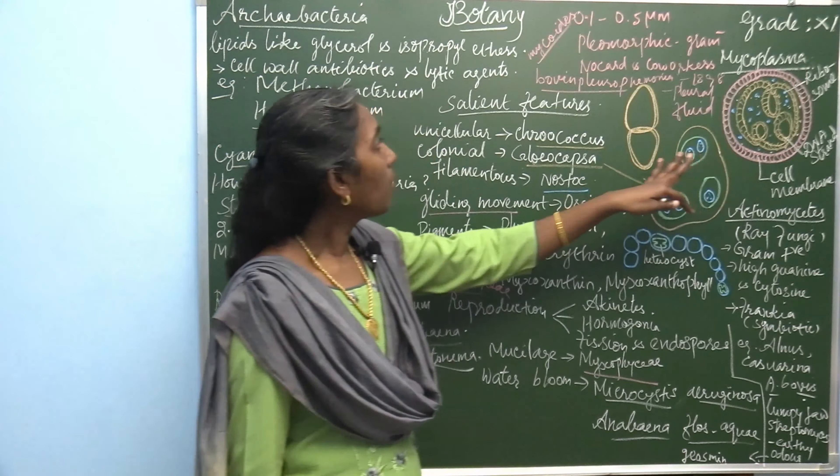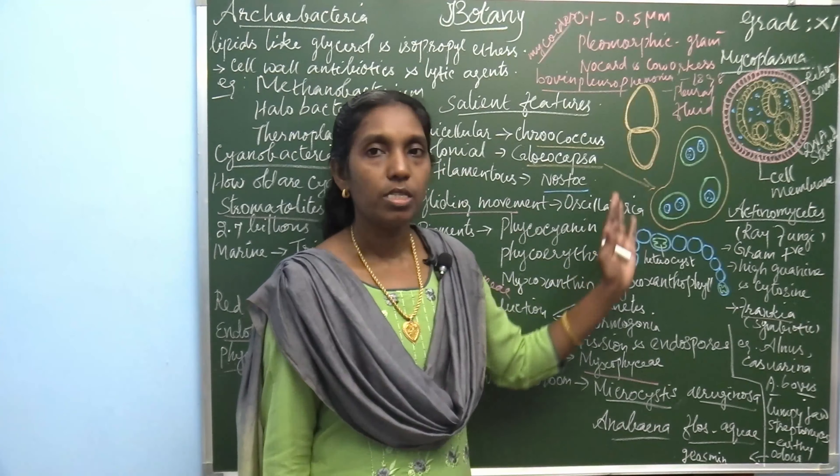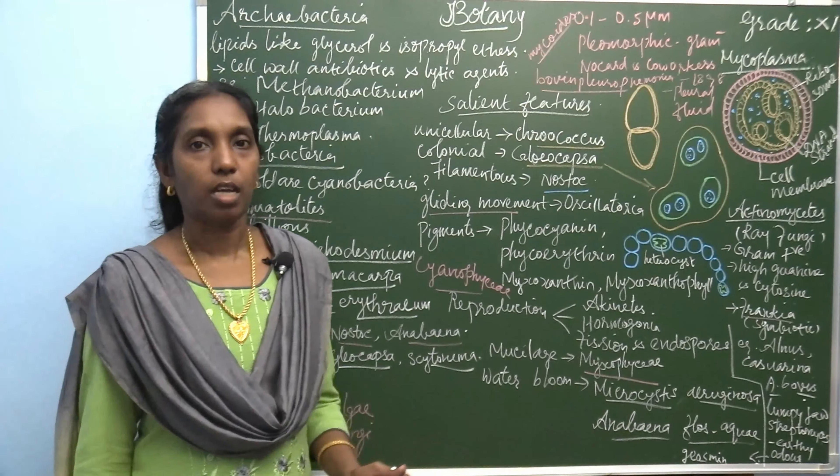Let's review what you learned today: archibacteria, then cyanobacteria and its salient features, then mycoplasma and actinomyces. Draw the diagrams in your class notes and learn all these questions. Thank you.